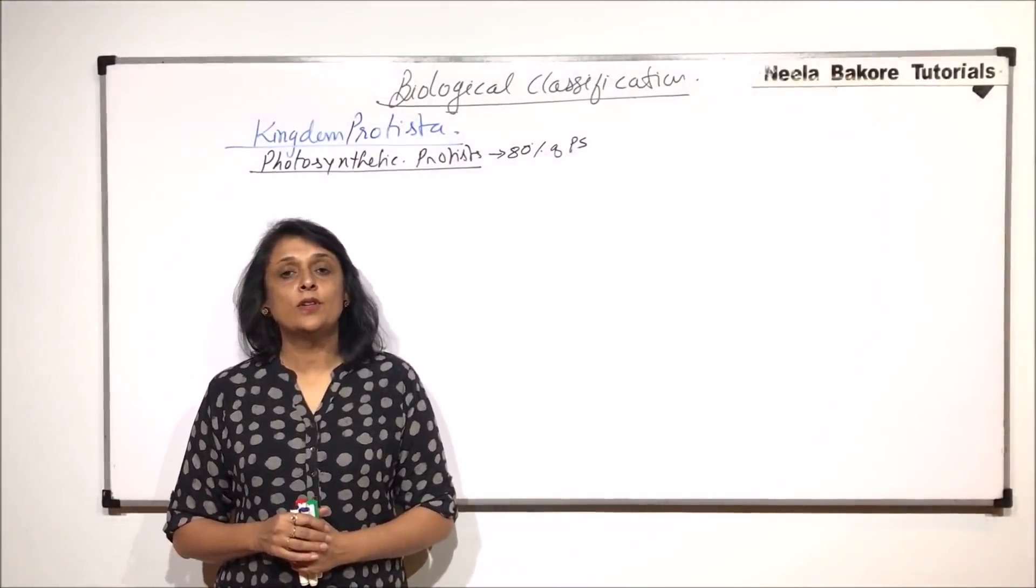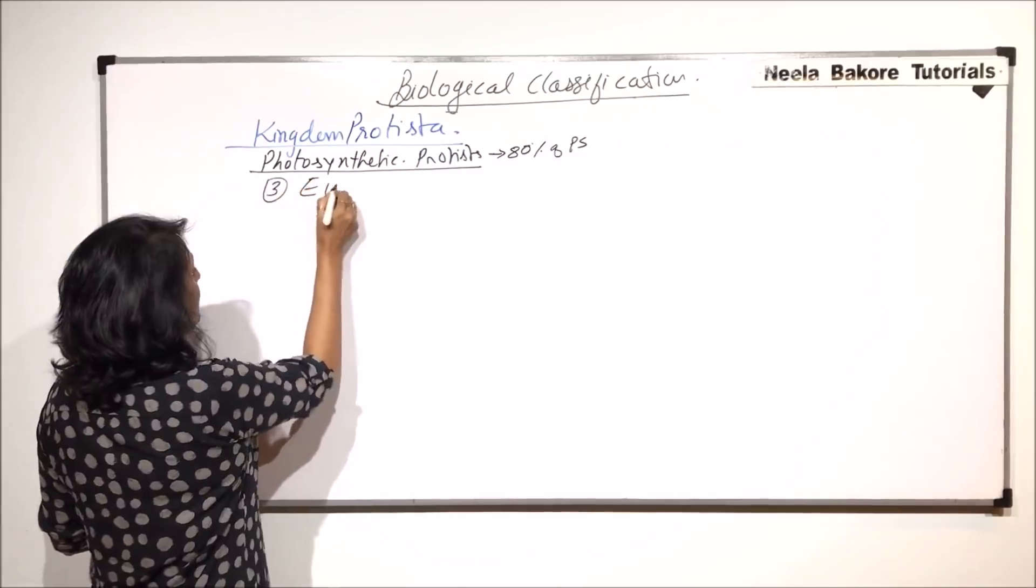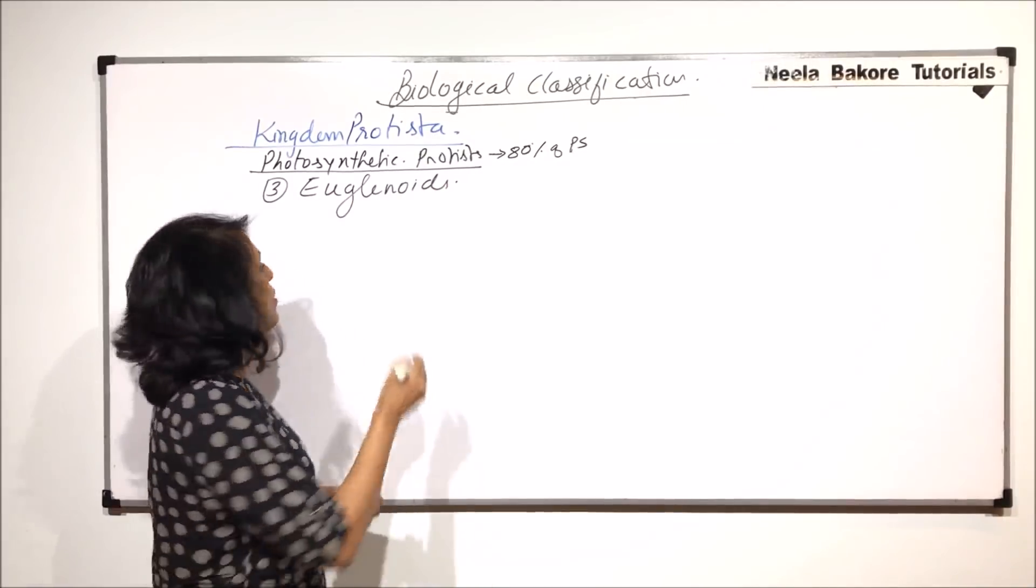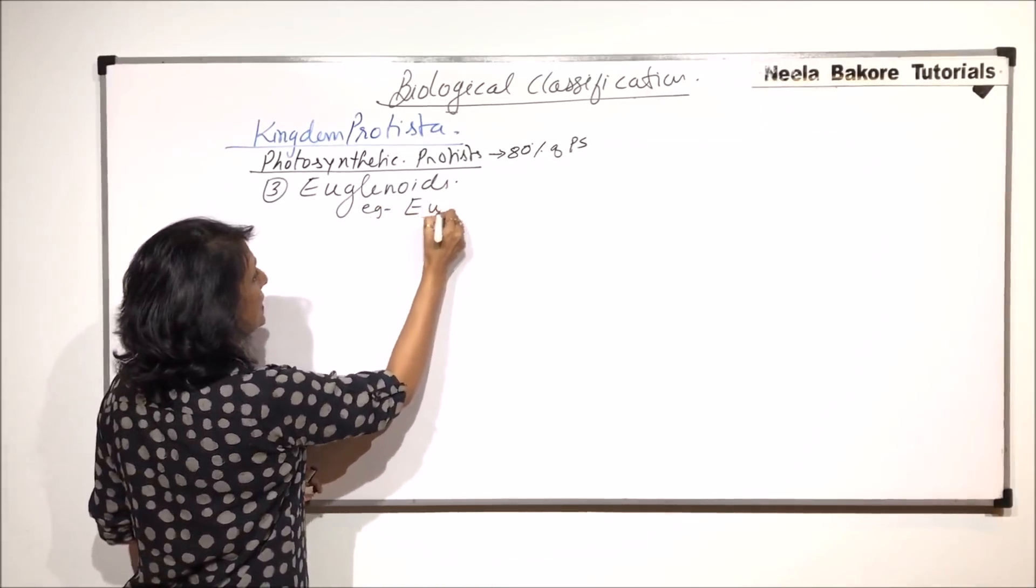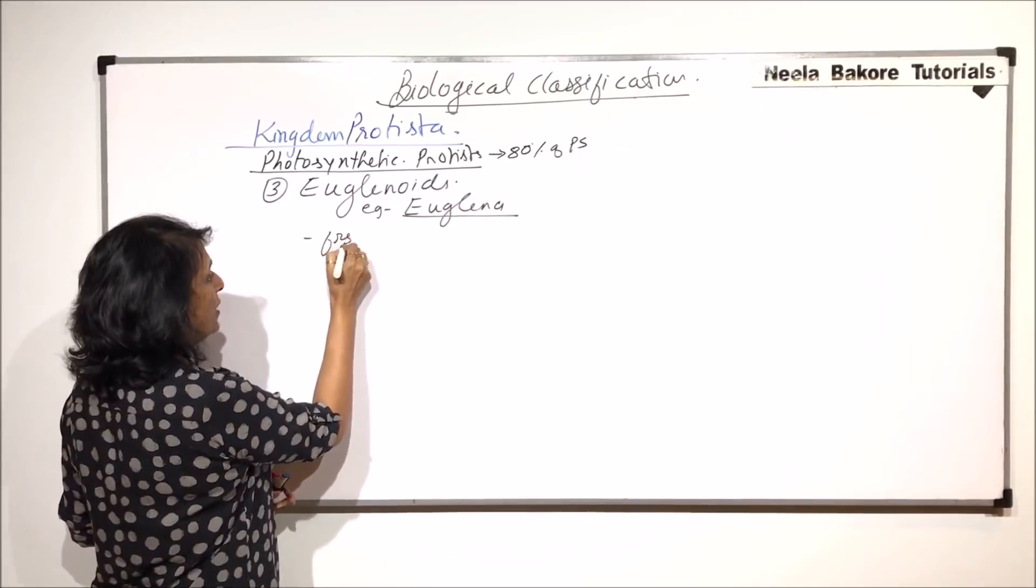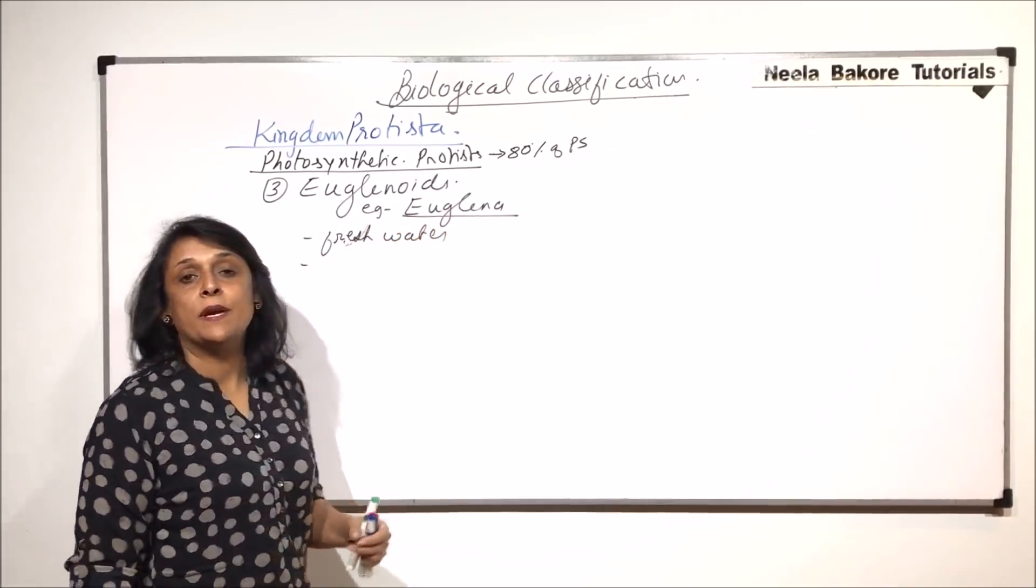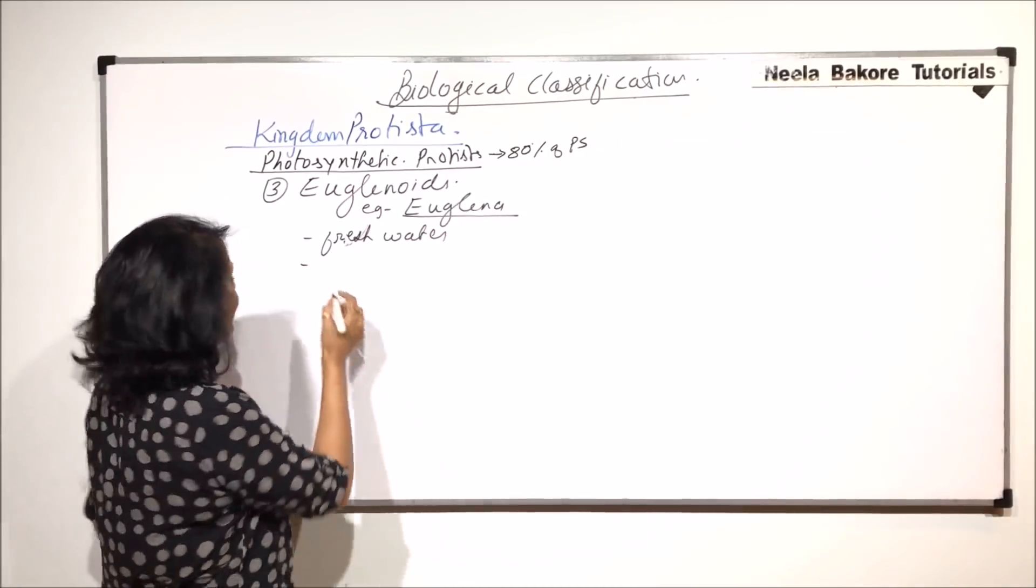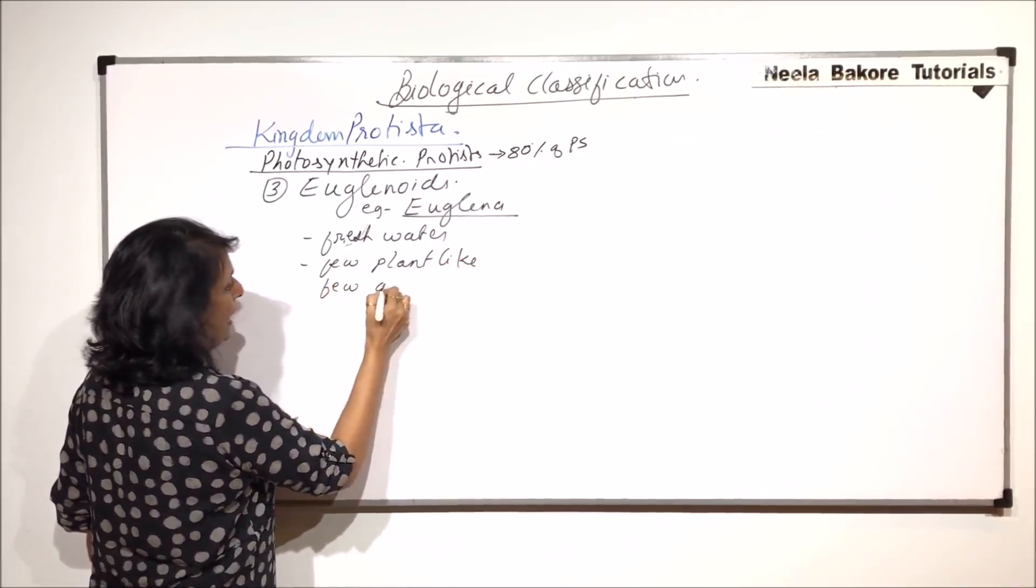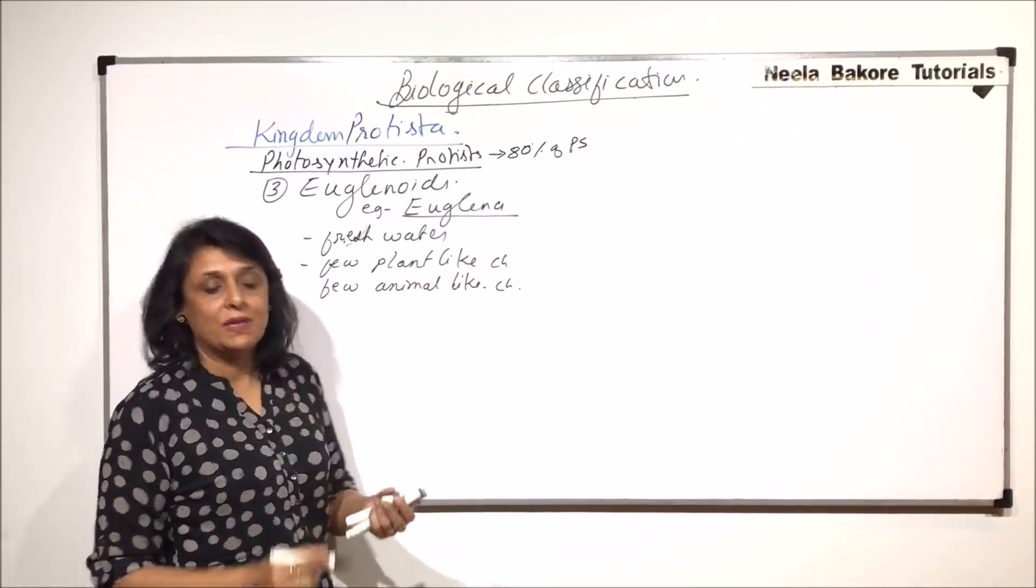In this part we will talk about the third group of the photosynthetic protist, euglenoids. The most common example is Euglena. Euglenoids are found in fresh water and they exhibit both plant-like and animal-like characters.